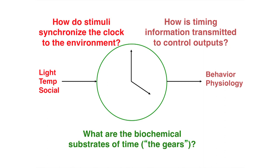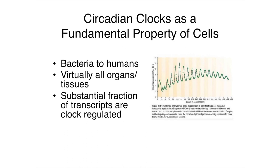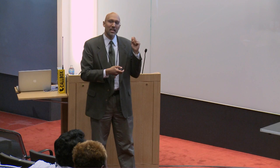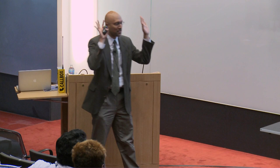One of the things we've learned — a real sea change in how we think about circadian clocks — is that they're a fundamental property of life. Clocks are found from bacteria to humans. This is an example of a molecular gene expression rhythm in a photosynthetic bacterium, which obviously uses the sun as its energy source, so aligning its internal biology to when the sun will be there is critical. Even more surprising, when we learned about the genetics of circadian clocks, they're found in virtually all of our organs and tissues — your liver, lung, muscle — they all have their own clocks.